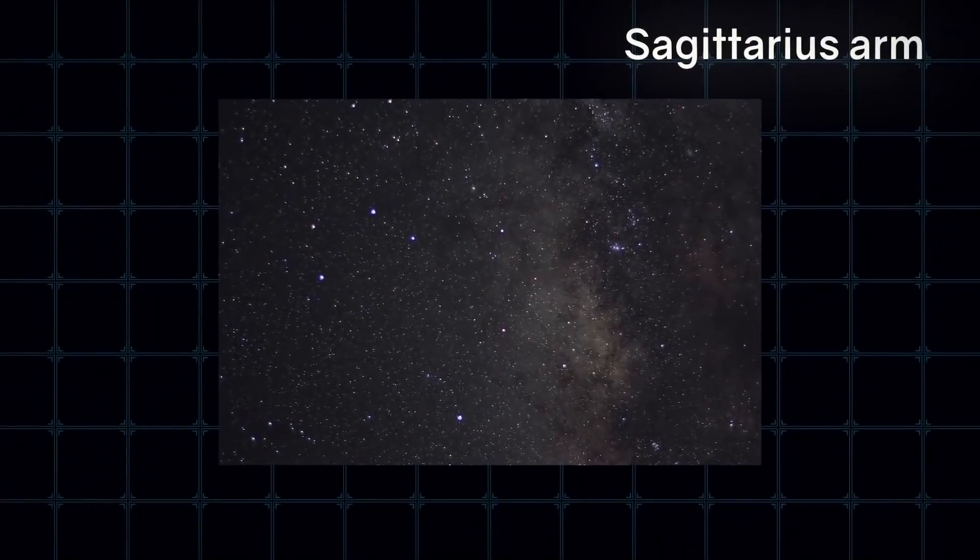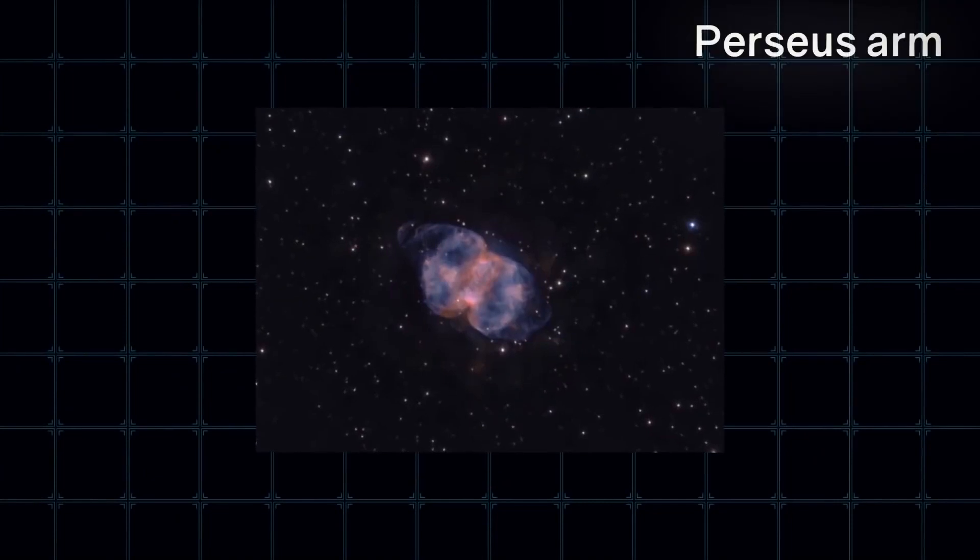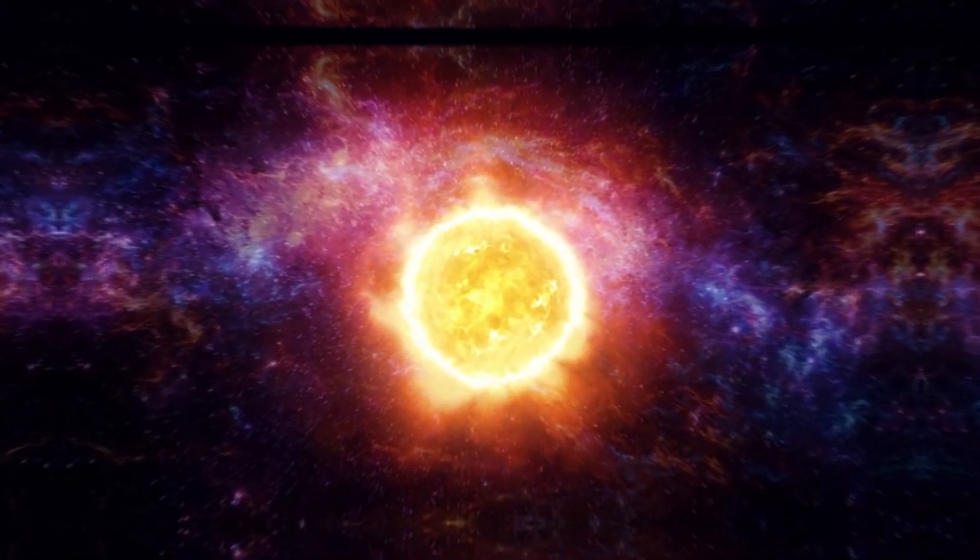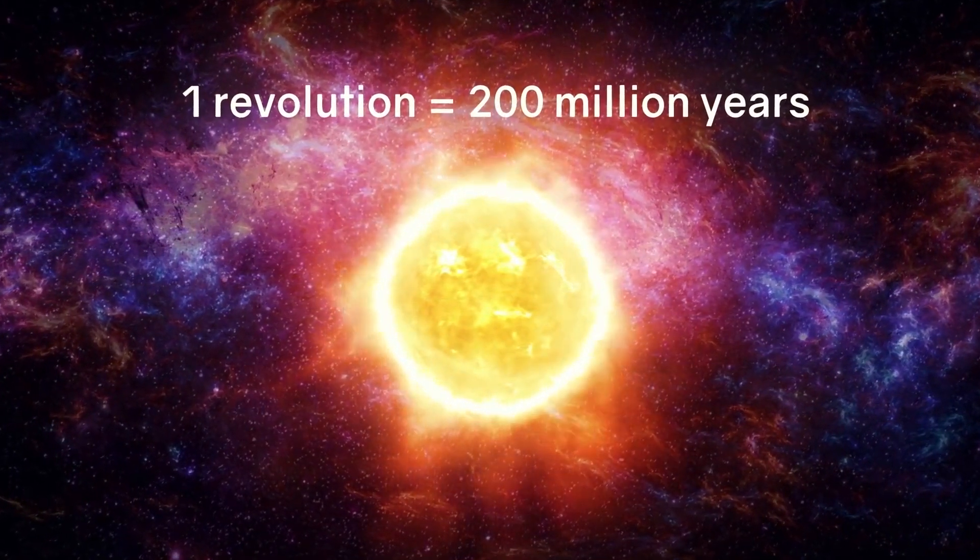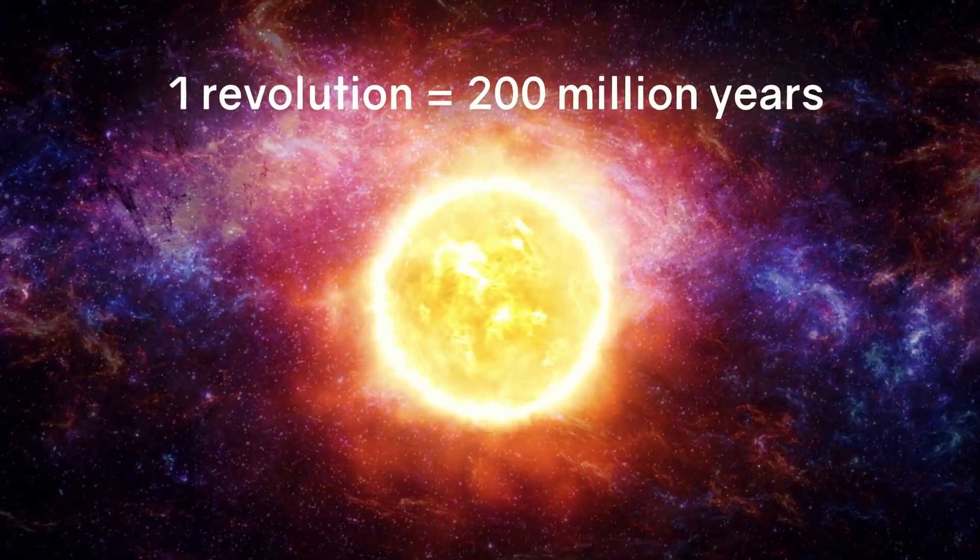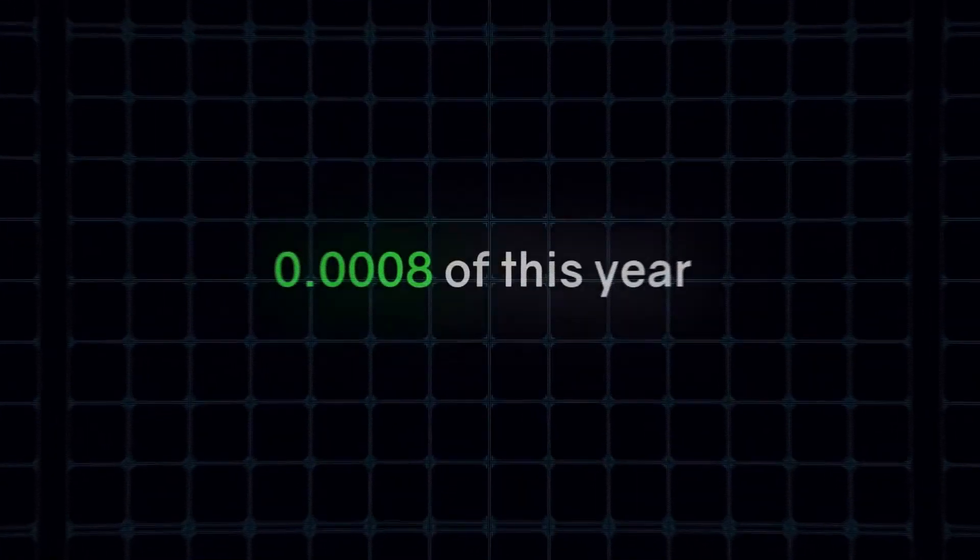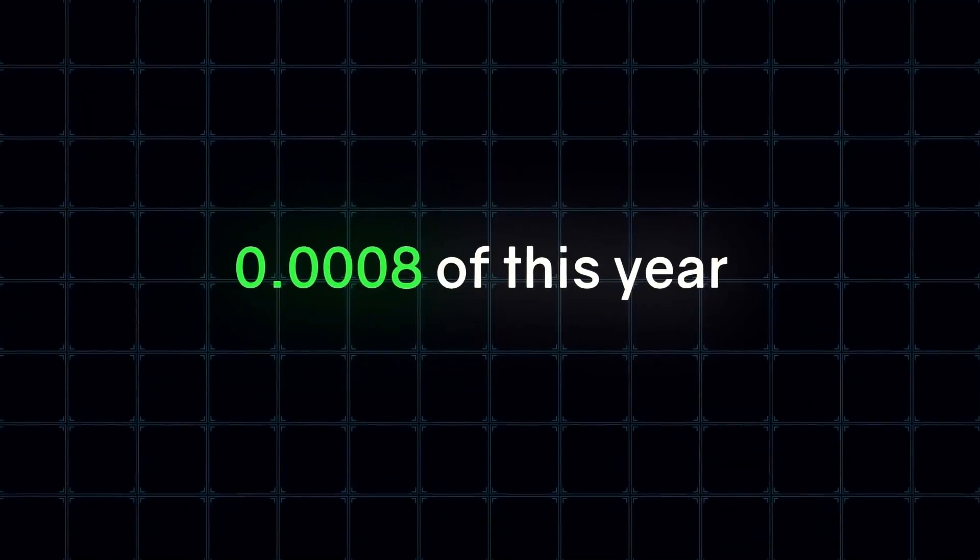Our Sun is approximately midway between the Sagittarius and Perseus arms right now, and our Sun circles around the galactic center. It rotates once every 200 million years. This is what we call a galactic year. Since the appearance of man, only 0.0008 of this year is gone.